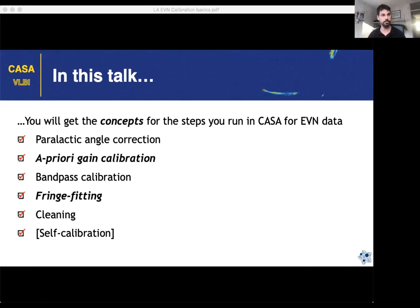Some calibration steps should be applied in EVN data sets — for example, parallactic angle correction mentioned yesterday. Some calibrations are the same not only for VLBI but for almost any radio data analysis, like bandpass calibration and self-calibration. Some are really particular to VLBI, like the a priori gain calibration — how we apply system temperatures. In this talk I won't go into detail on each; you will have focused lectures on each of these steps.